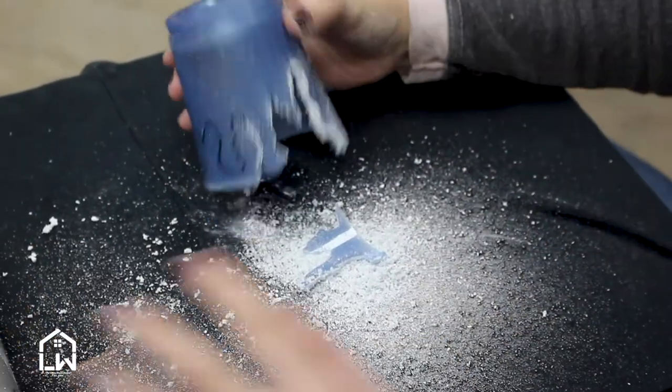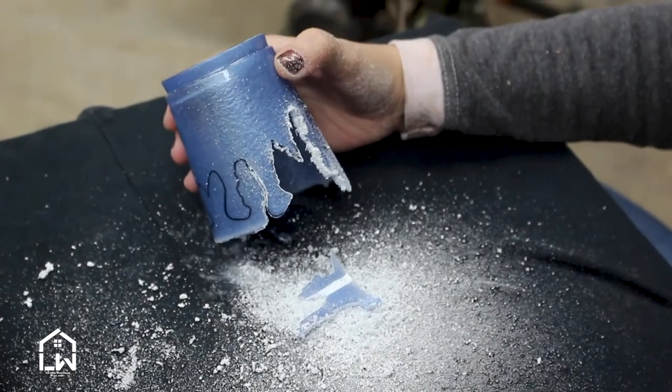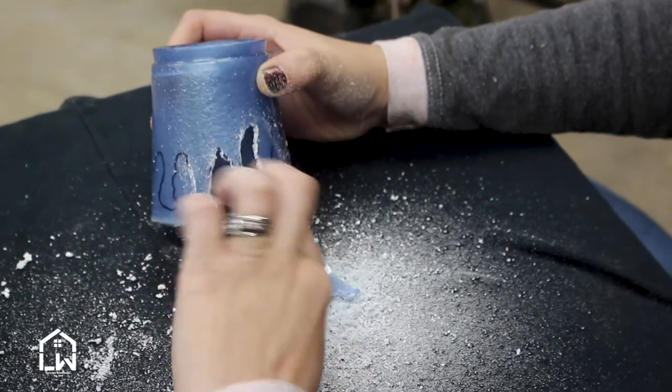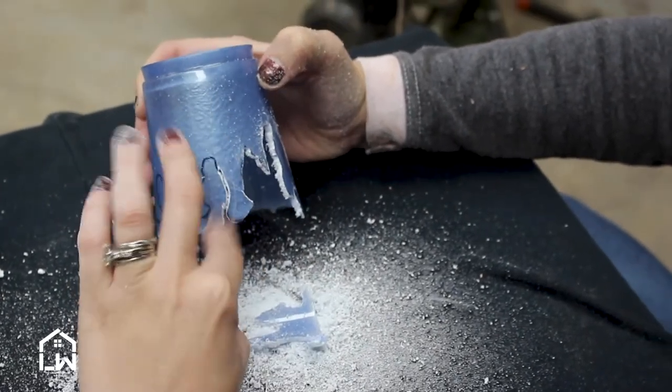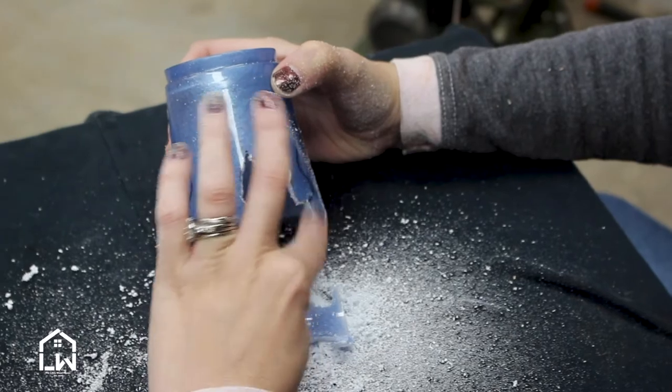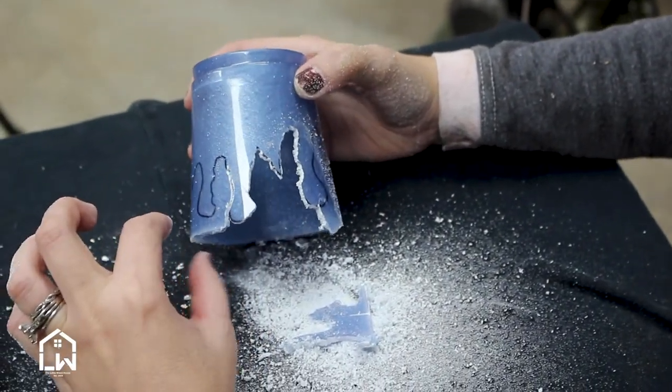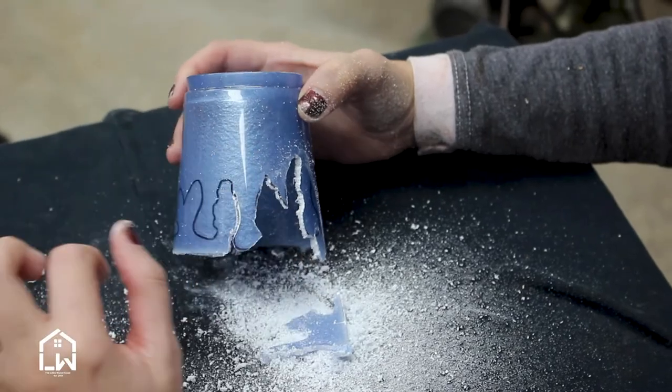All right, so this is messy—make sure you wear a mask. But as you can see, kind of got our outline, so we're going to go around the whole thing and then we're going to touch it up with something a little smaller, a little smoother, give it that shape that we're really looking for.